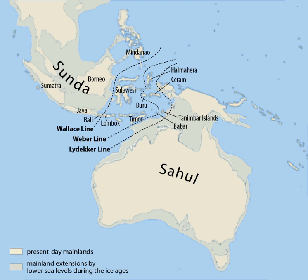Botanists often include Sundaland, the adjacent Philippines, Wallacea, and New Guinea in a single floristic province of Malaysia, based on similarities in their flora, which is predominantly of Asian origin. During the last glacial period, sea levels were lower and all of Sundaland was an extension of the Asian continent. As a result, the modern islands of Sundaland are home to many Asian mammals including elephants, monkeys, apes, tigers, tapirs, and rhinoceros.